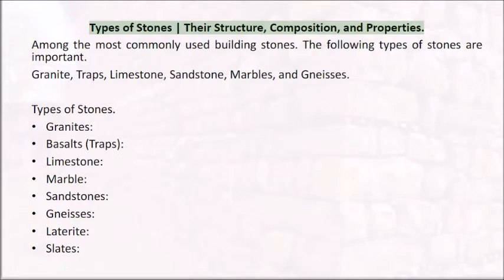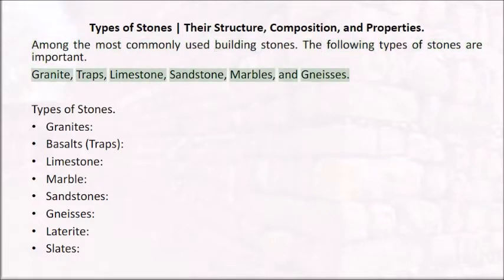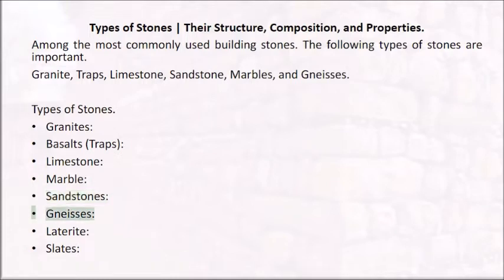Types of stones — their structure, composition, and properties. Among the most commonly used building stones, the following types are important: granite, traps, limestone, sandstone, marbles, gneisses, laterite, and slates.